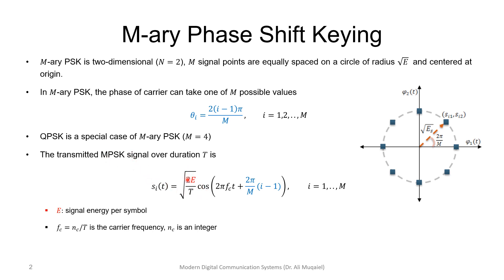The transmitted signal will be, or can be represented as, square root of two E over T times cosine at that carrier frequency with a proper shift. Remember that E is the signal energy per symbol, and capital T is the symbol duration, and the carrier frequency is, or has to be, integer multiples of one over T.